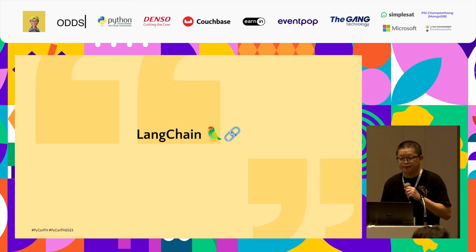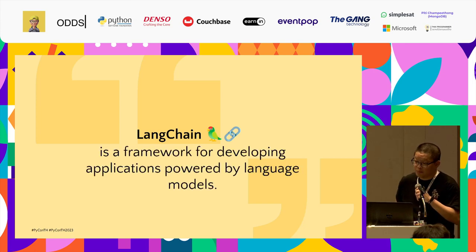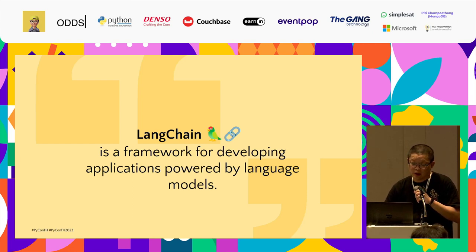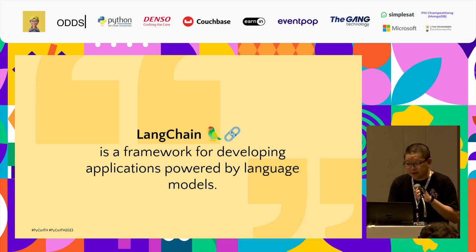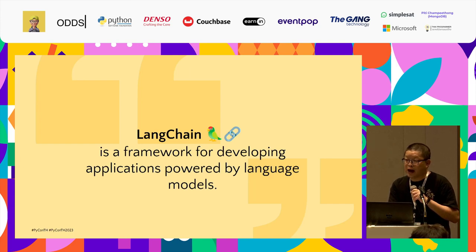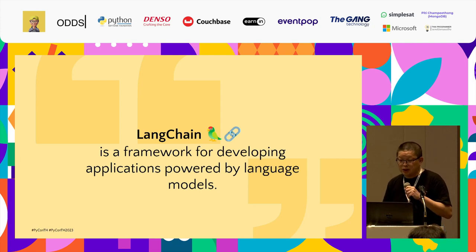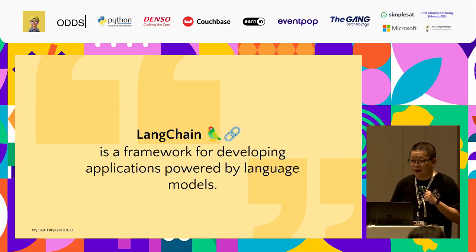So what is LangChain? LangChain is a framework for developing applications powered by language models. Why do we choose to use LangChain? There are two strong points. First, LangChain offers plenty of components to work with LLMs — they are modular and easy to use. Second, it provides a lot of so-called off-the-shelf chains, a structured assembly of components for accomplishing specific higher-level tasks. These are very helpful for development, especially if we want to make a rapid prototype or proof of concept.